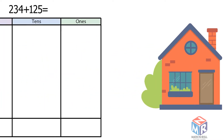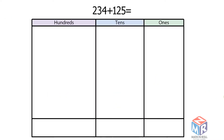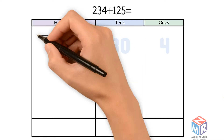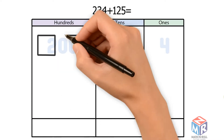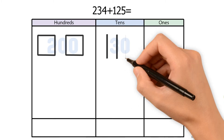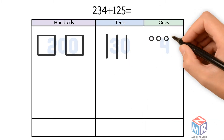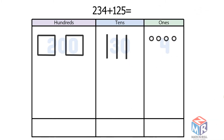Let's go back to our example. 234 has 2 hundreds, so we draw 2 squares. It has 3 tens, so we draw 3 bars. And it has 4 ones, so we draw 4 circles.